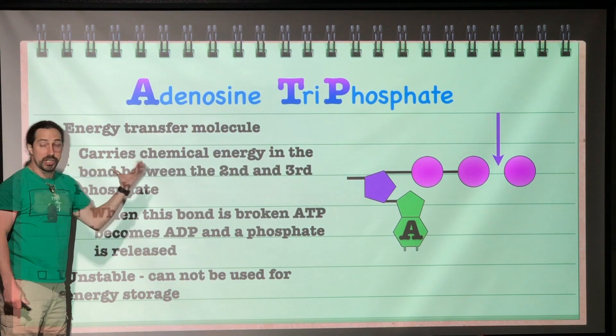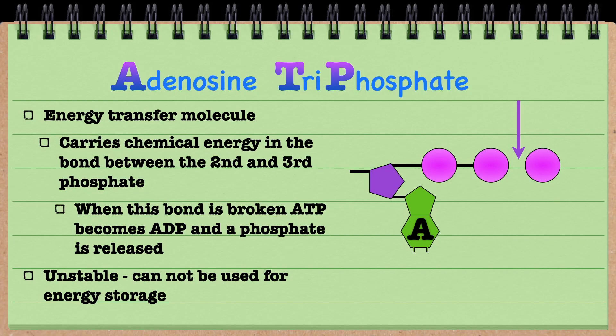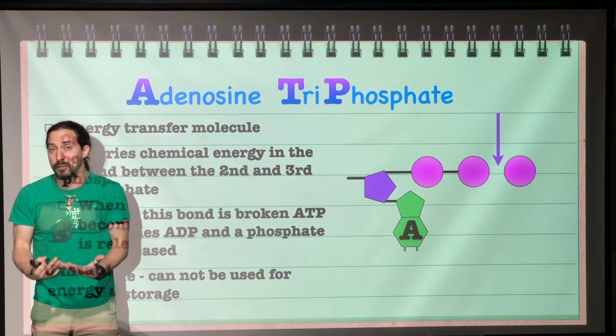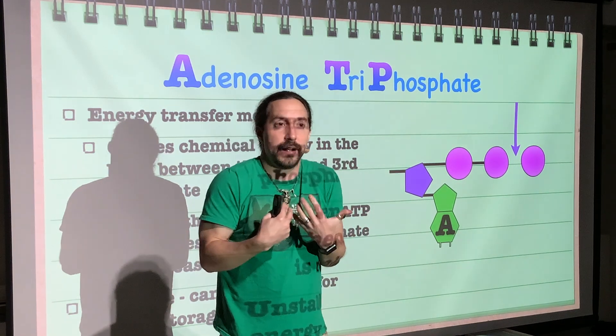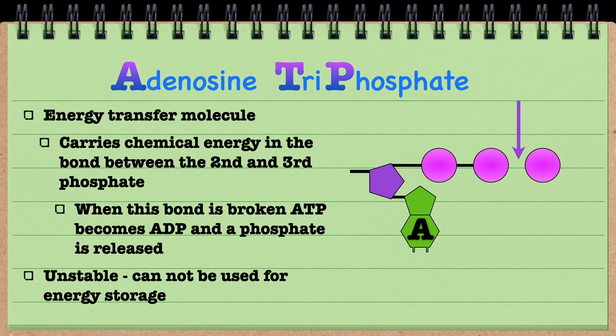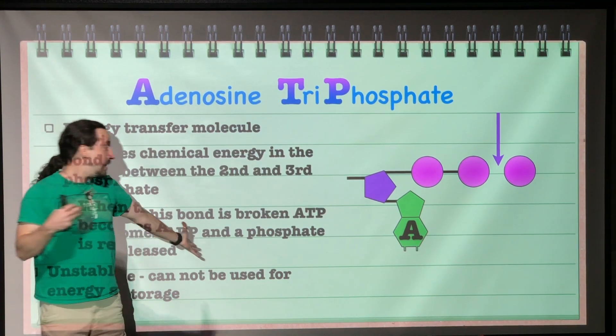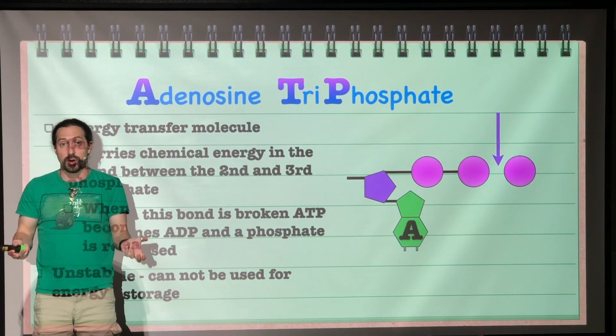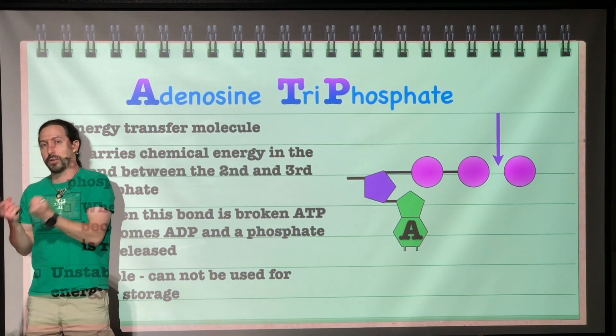The reason why we don't use it for an energy storage molecule is because it is very unstable. The bond between the second and the third phosphate would actually break down on its own. And that means we wouldn't be able to store it for very long periods of time. In fact, it would break down extremely rapidly. That means that a lot of energy would be lost, and we do not want to have a lot of energy lost within us. Cells don't want to waste energy, because if they do, that can mean the difference between life or death. That's why ATP is not used as an energy storage molecule, and it's only used as an energy transfer molecule.